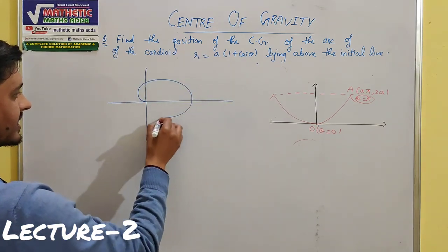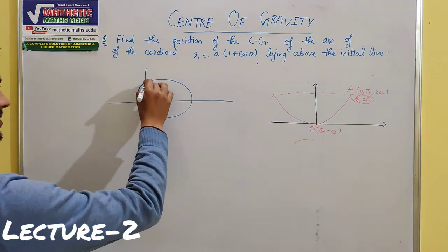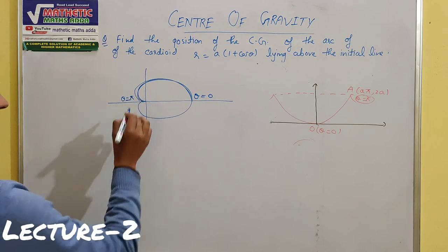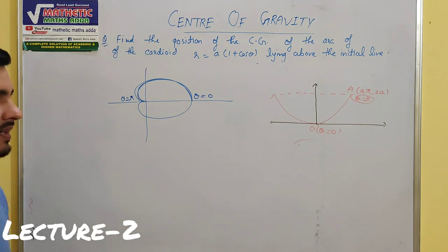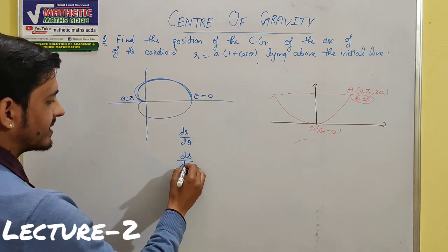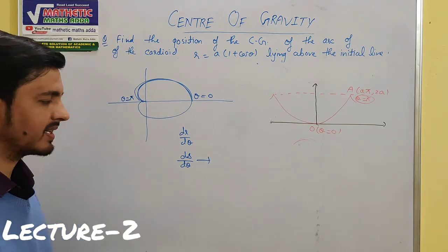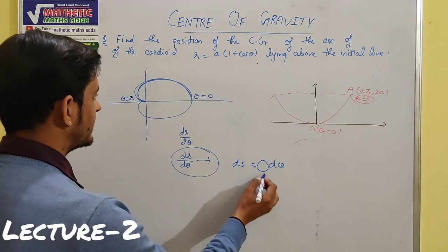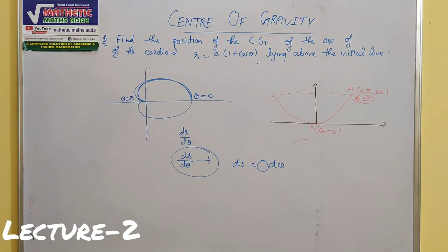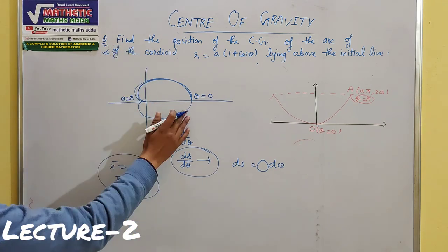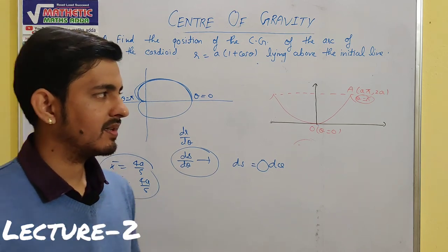For the cardioid: the cardioid is shaped like this. We need to find the center of gravity of the arc above the initial line. For the center of gravity, θ ranges from 0 to π. When finding x̄ and y̅, take limits 0 to π. Since r is given, find dr/dθ and then ds/dθ using the polar formula from the first lecture. Substitute ds in terms of dθ, and you can easily find x̄ and ȳ using integration. The answers are x̄ = 4a/5 and ȳ = 4a/5. Solve this yourself using the hints and limits I have provided.